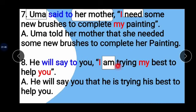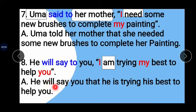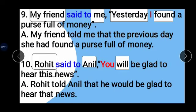Example 8: He will say to you, 'I am trying my best to help you.' Here 'say to' becomes 'say you' — 'to' is removed. He is the subject, 'you' is the object. Conjunction 'that' is added. 'I' changes to 'he,' 'am' changes to 'is,' and 'my' changes to 'his.' 'You' remains as it is. Answer: He will say you that he is trying his best to help you.